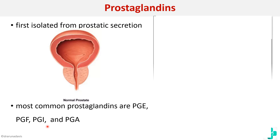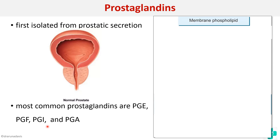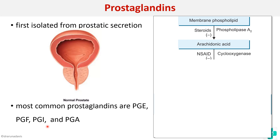Now we will see about the synthesis. From the membrane phospholipids, phospholipase A2 will convert them to arachidonic acid, and arachidonic acid by the help of the enzyme cyclooxygenase converts it into PGH2. This PGH2 can be further divided into many other prostaglandins, or many other prostaglandins can be derived from this compound.